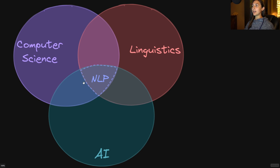As depicted here, natural language processing is a vast subfield that falls in the overlap between the fields of linguistics, computer science, and artificial intelligence. The core focus of this field is on human-machine interaction. More specifically, this field focuses on the use of computers to process and analyze human language data. Generally speaking, human languages are often referred to as natural language in this field.